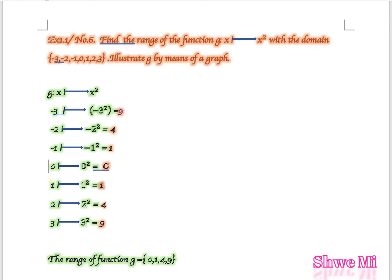Computing the values: (-3)² = 9, (-2)² = 4, (-1)² = 1, 0² = 0, 1² = 1, 2² = 4, 3² = 9.